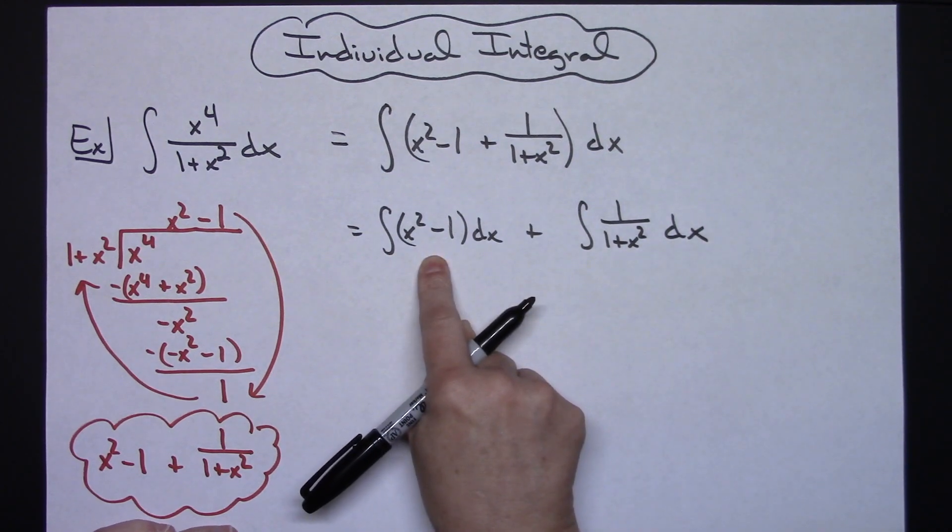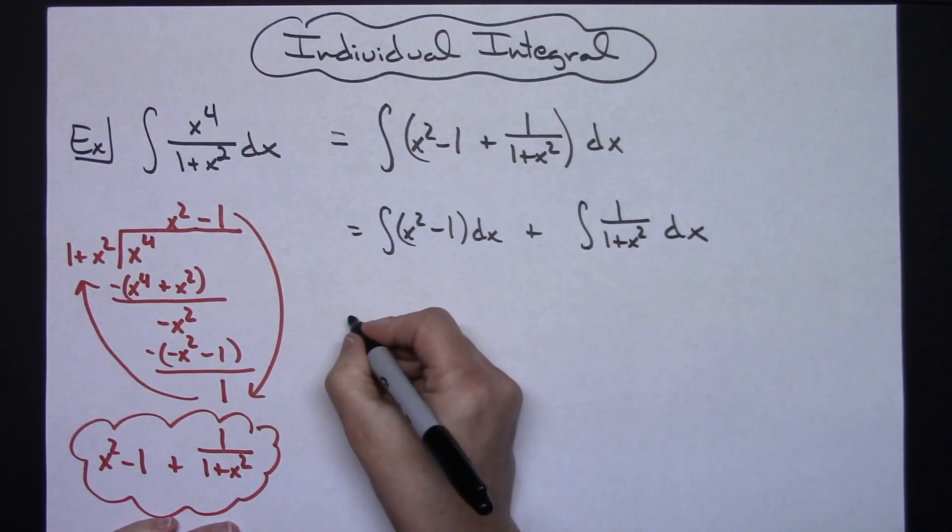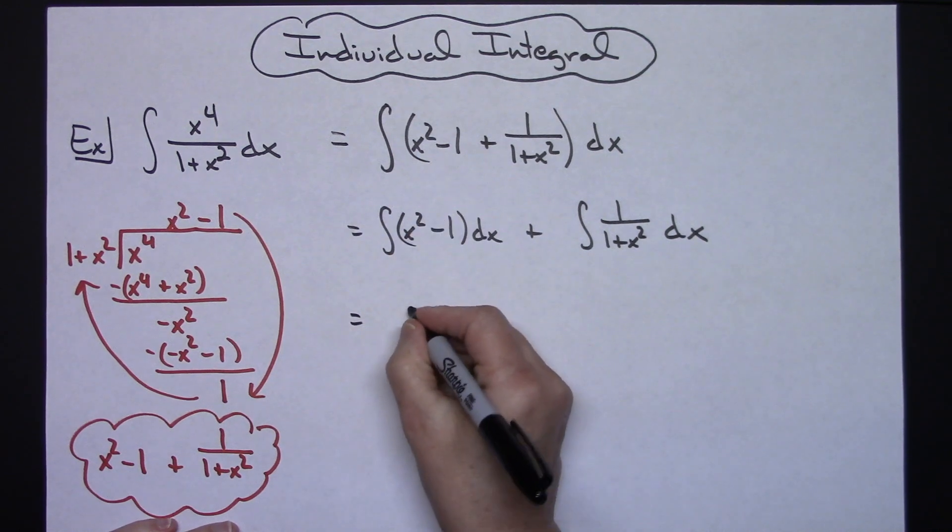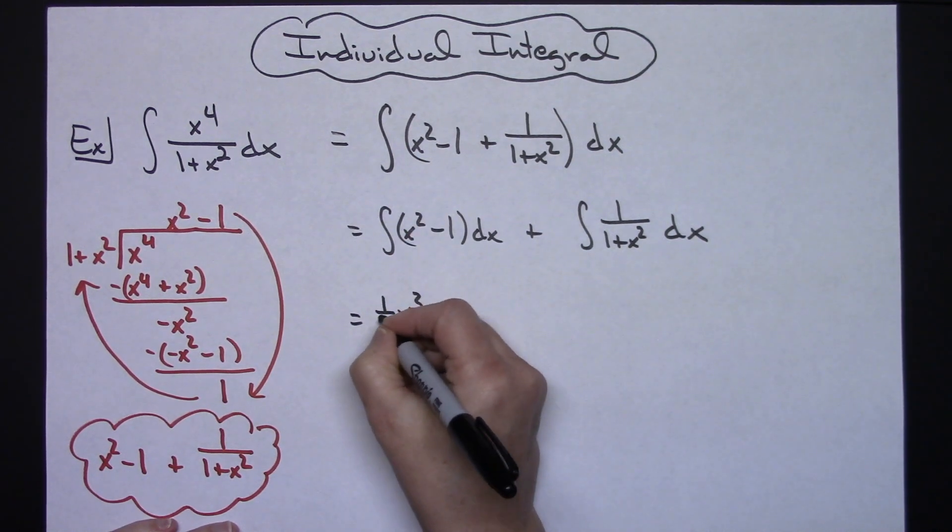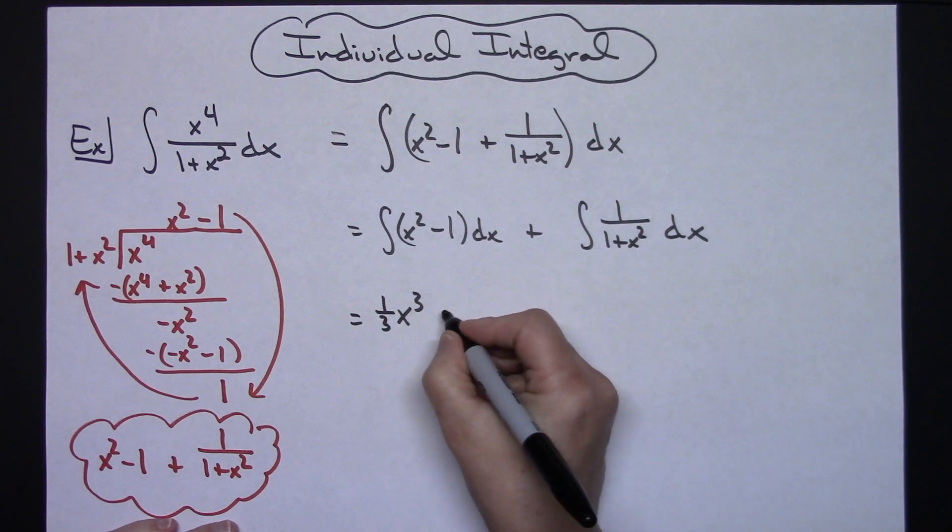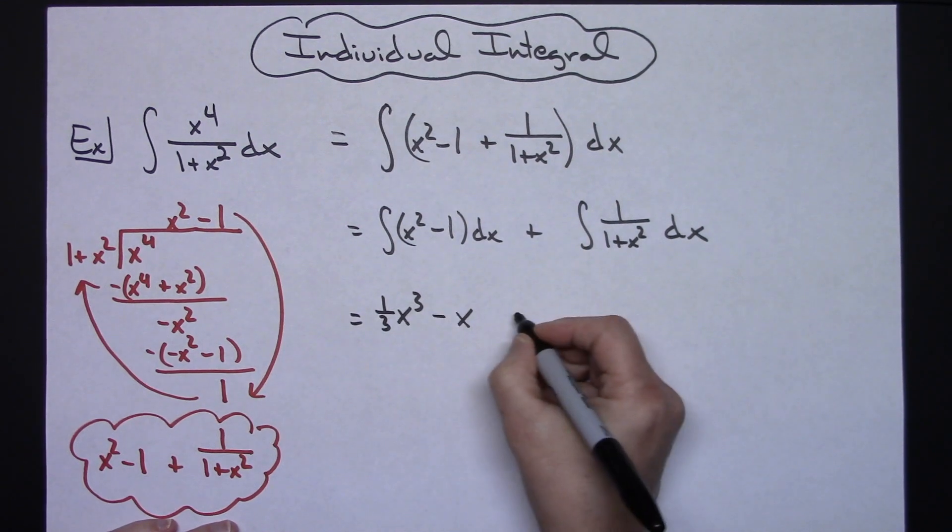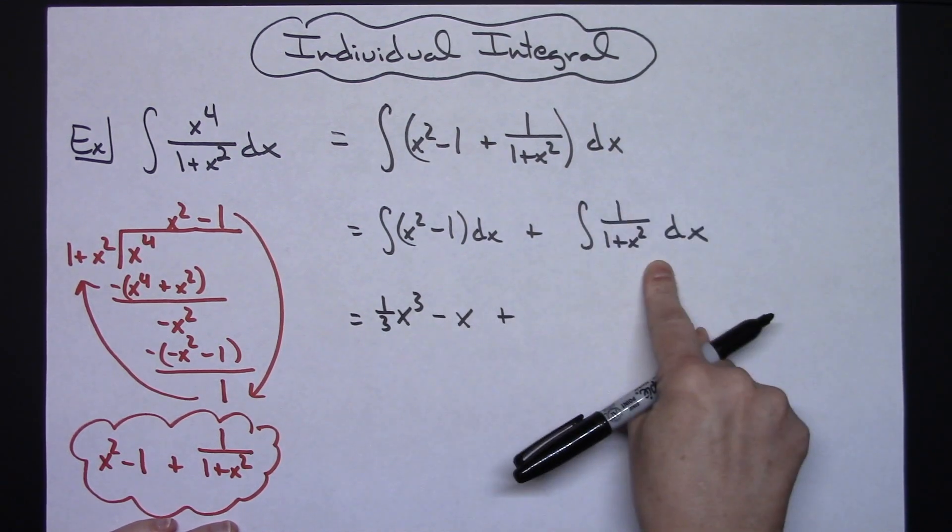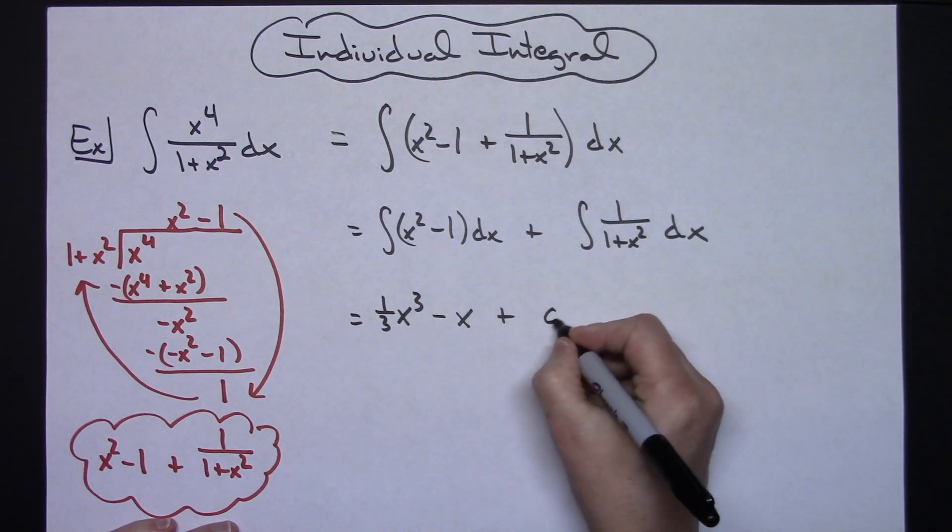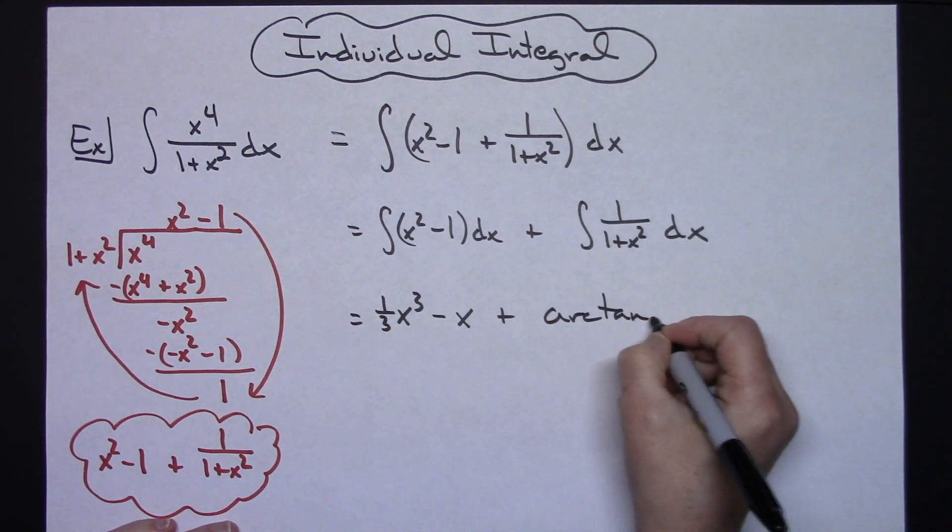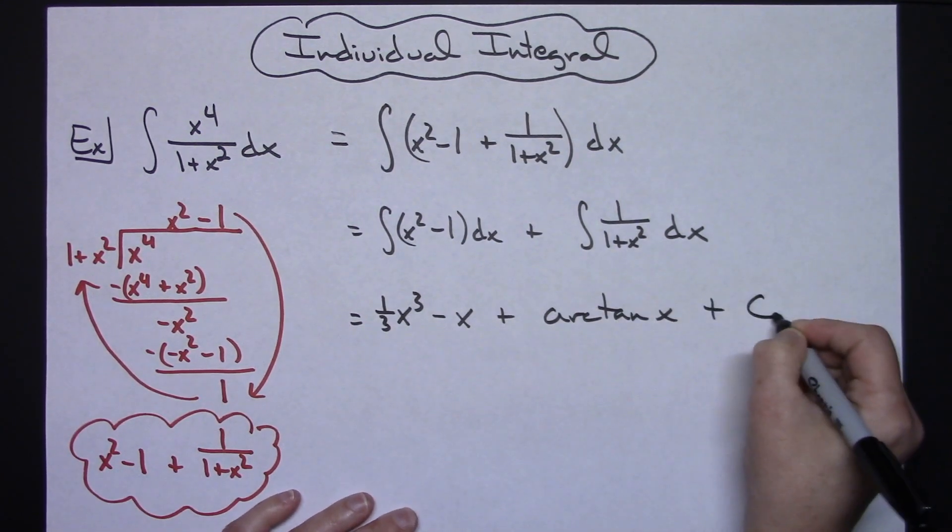This is going to be a straightforward integration here. So let's go ahead and integrate. Adding 1 to that exponent will have x to the third with 1 third out in front and then minus 1 there will integrate to minus x. This integral over here hopefully you have memorized as arc tan. So arc tan x and then plus c.